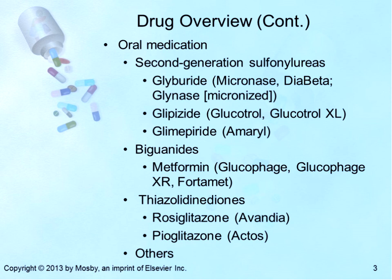The biguanide metformin primarily decreases hepatic glucose production. It also has a minor effect on insulin sensitivity in both liver and peripheral tissues. It has no direct effect on the pancreas and therefore does not enhance insulin secretion. Metformin has also been shown to decrease triglycerides and LDLs and to increase high-density lipoproteins.